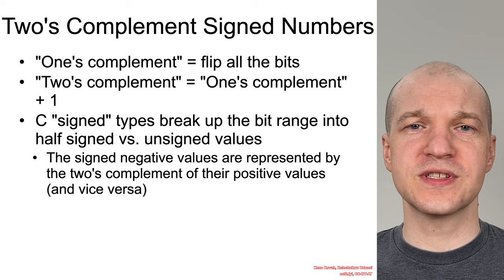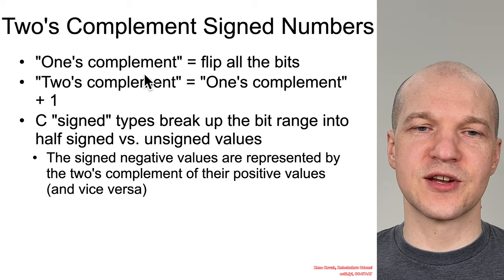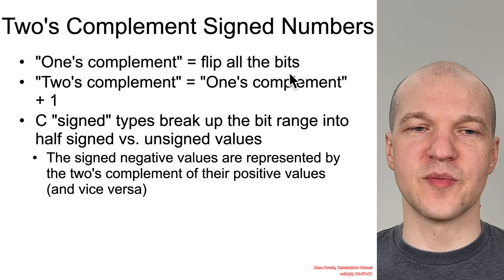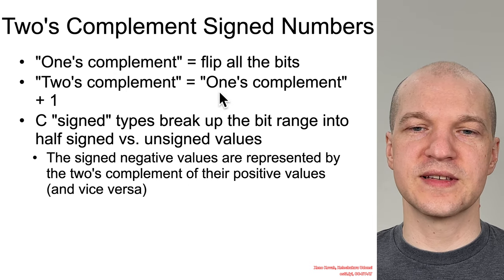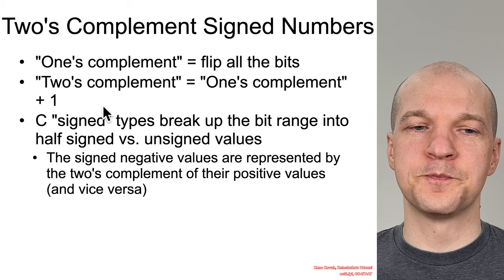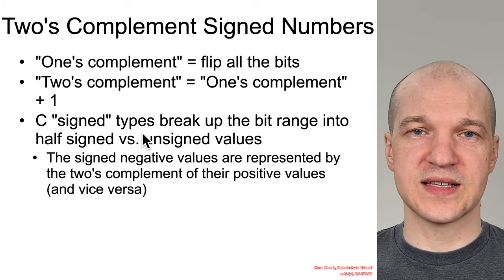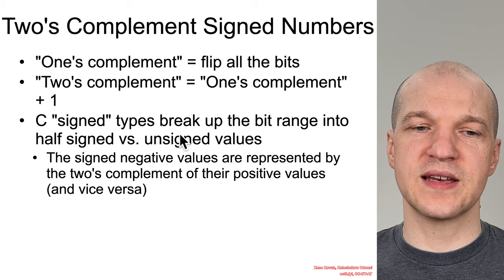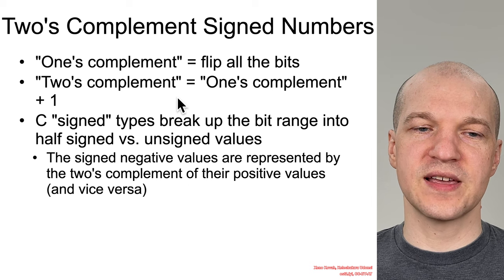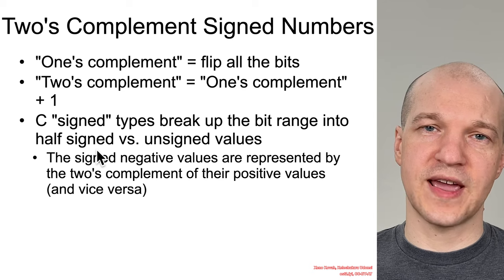Just a quick refresher of two's complement numbering system. One's complement is the notion of you take a value and you flip all the bits, and two's complement is one's complement, so flip all the bits and add one to that. In C, signed types, meaning things that can take on a positive and negative value, are represented as two's complement values where basically effectively half the range is available for positive and half for negative.